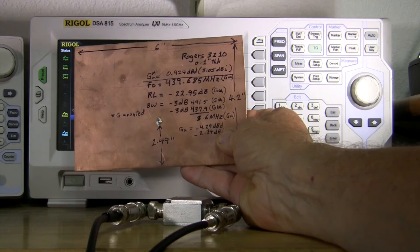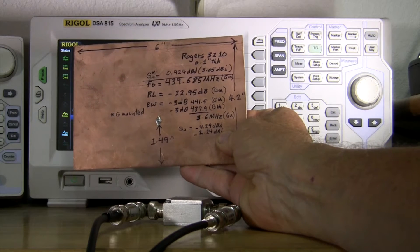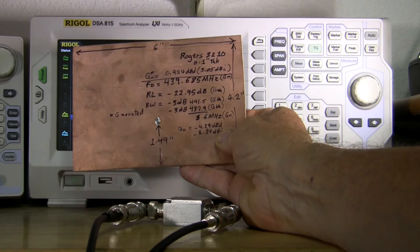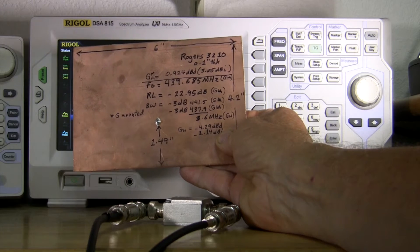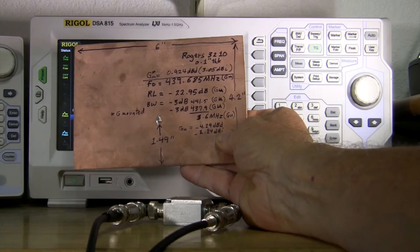It was on a HP network analyzer. Bandwidth 3 dB points was 437.9 to 441.5, so somewhere around just slightly above 440 megahertz.